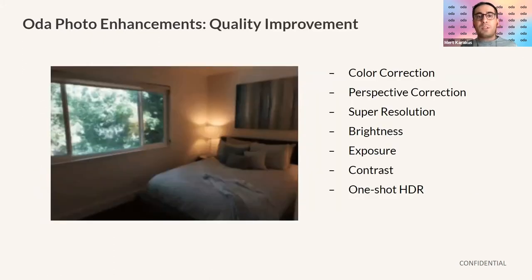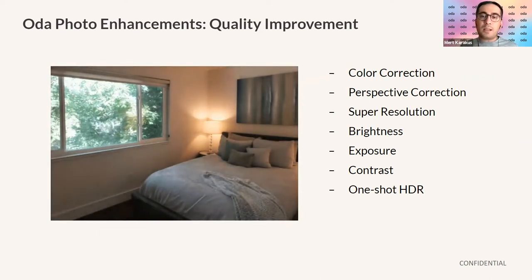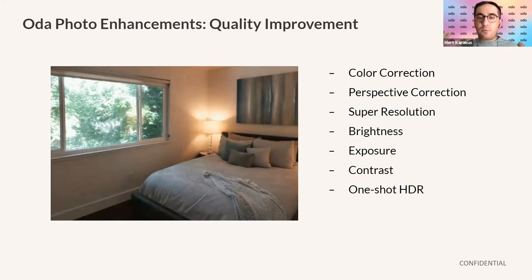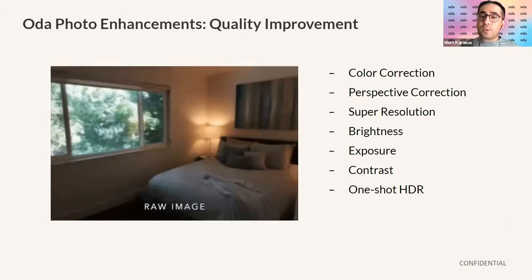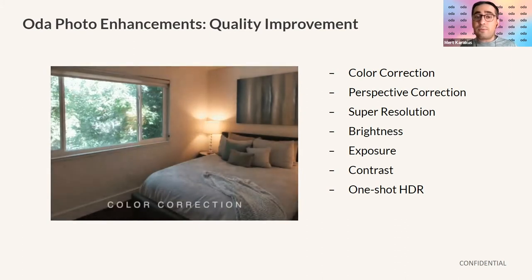The enhancements we perform are twofold. The first part is quality improvement, based on a number of quality metrics including color correction, perspective correction, exposure, and brightness. We do all this by first looking at the photo and identifying the specific needs of that photo. For instance, a photo suffering from low resolution will have our super resolution model applied to it, while another photo suffering from angle correction issues will be fixed by our models as well.